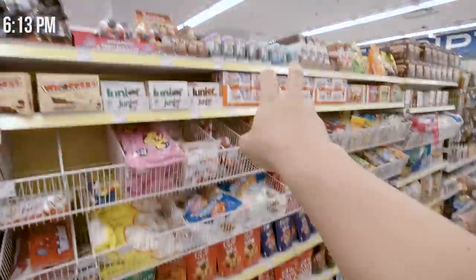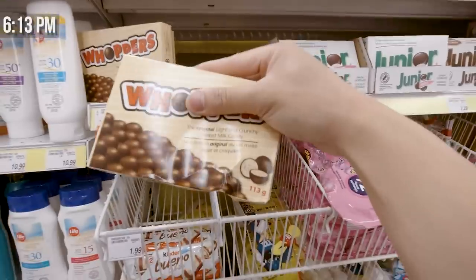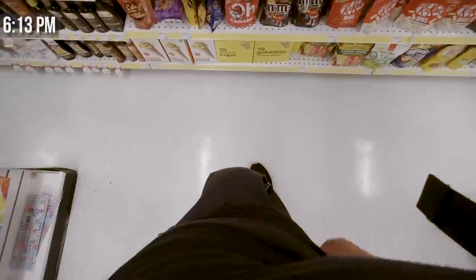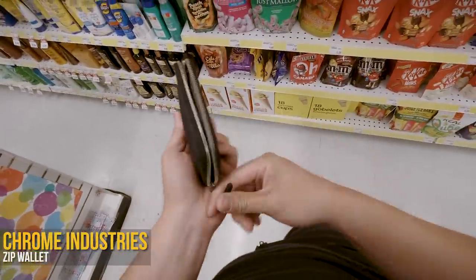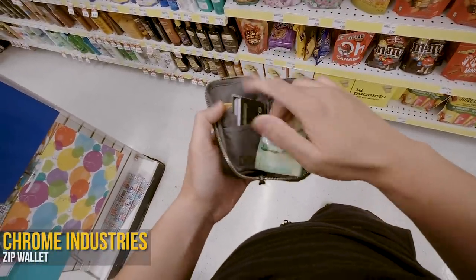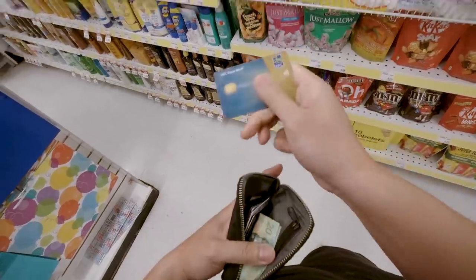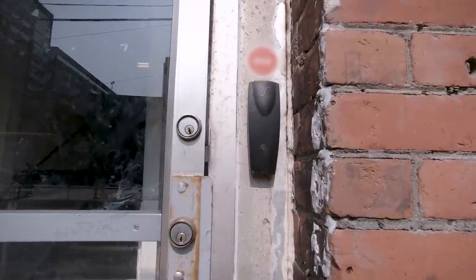Now during longer editing sessions, I like to head out to grab a snack. And today, some whoopers will do just fine. Making sure I've got enough cash in my wallet of choice, the Chrome Industries Zip Wallet. This may look like a skater boy wallet, and that's because it mostly is. And I love it. It stores everything I need, and it's just convenient for my daily routine.